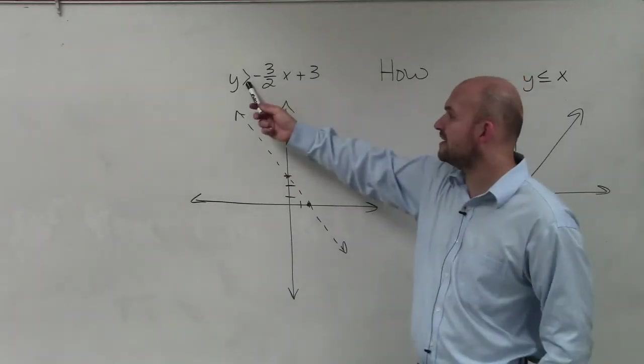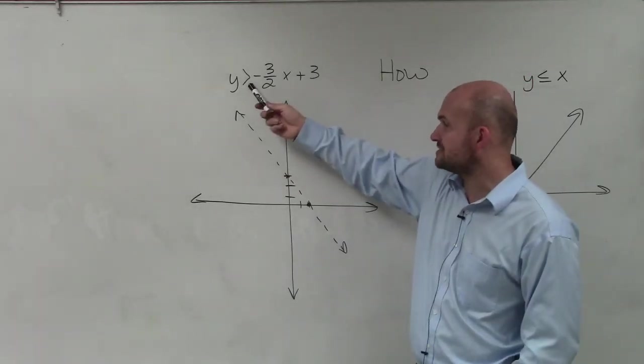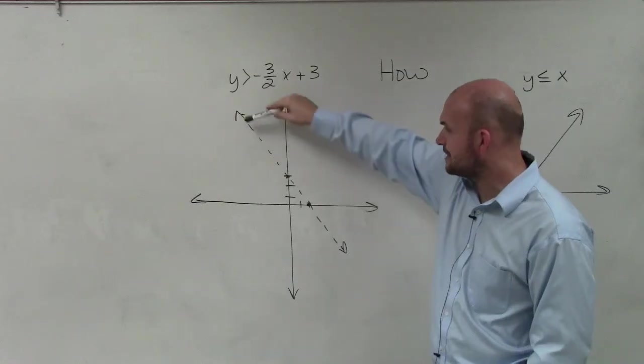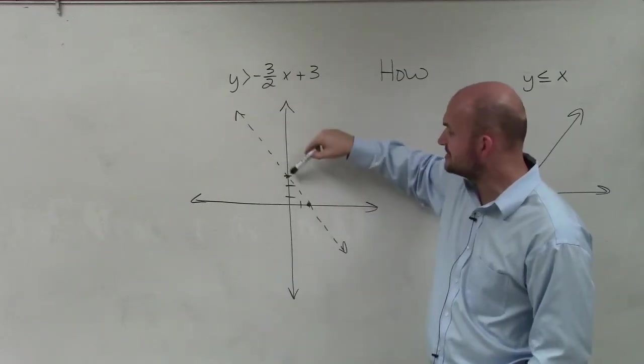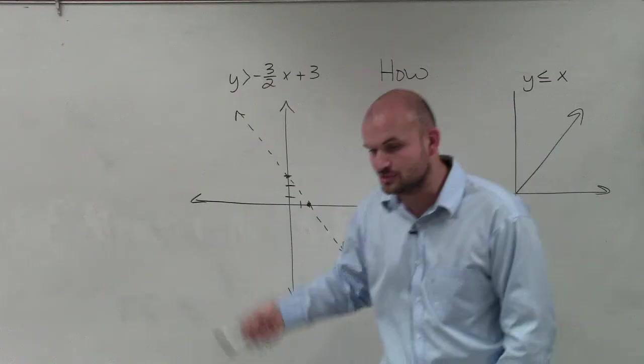You can see that whenever my equation is greater than or less than, I'm going to have a dashed line. That means any of the points that lie on this line are not going to be a part of the solution.